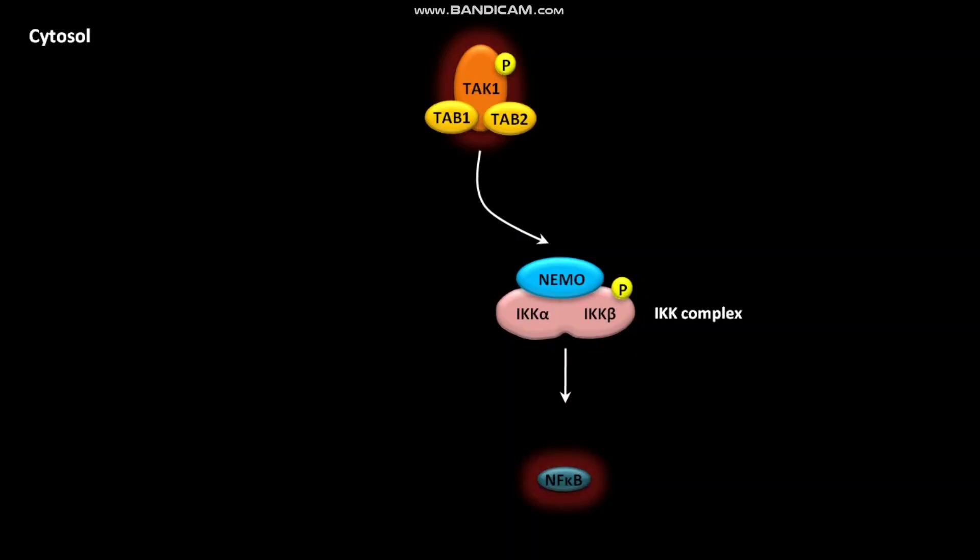After separating from the IKK complex, TAK1 activates MAP kinase pathways. This activation results in the activation of transcription factors like FOS and JUN, forming the active AP1 dimer.